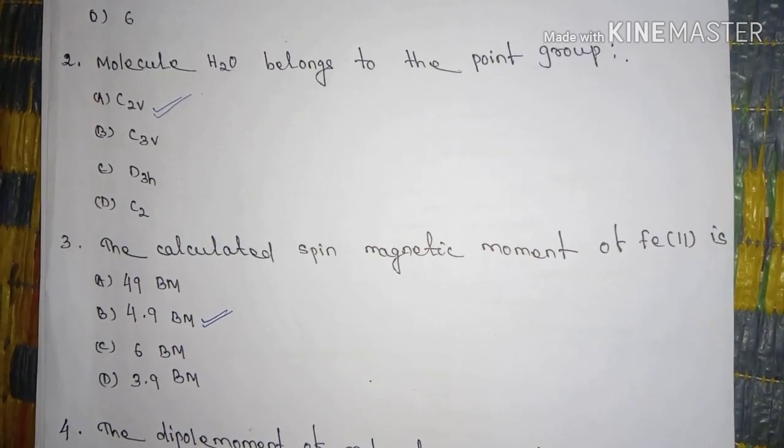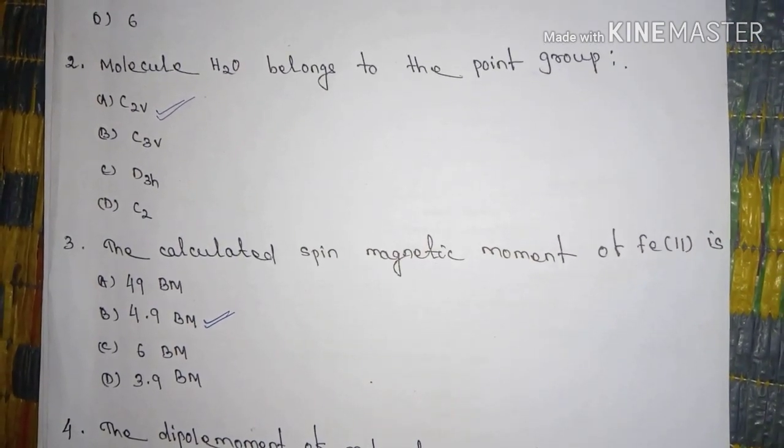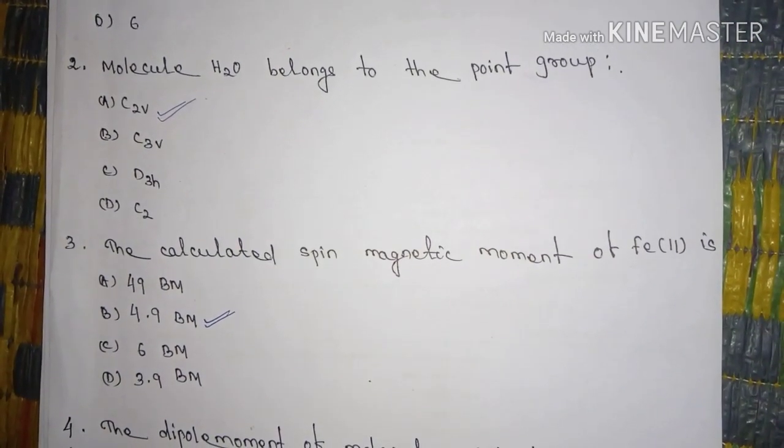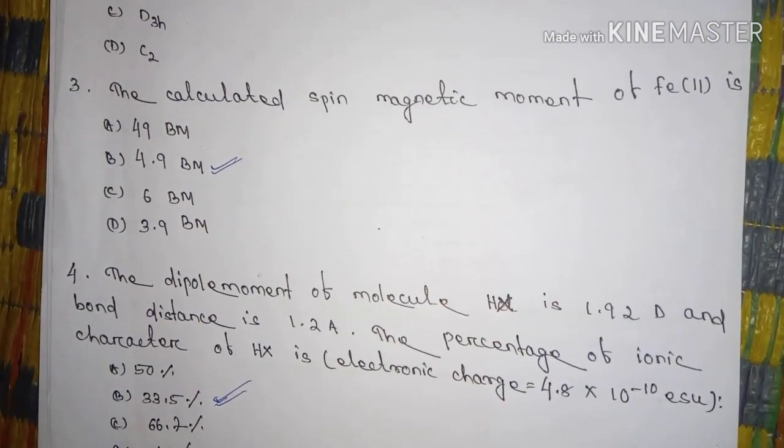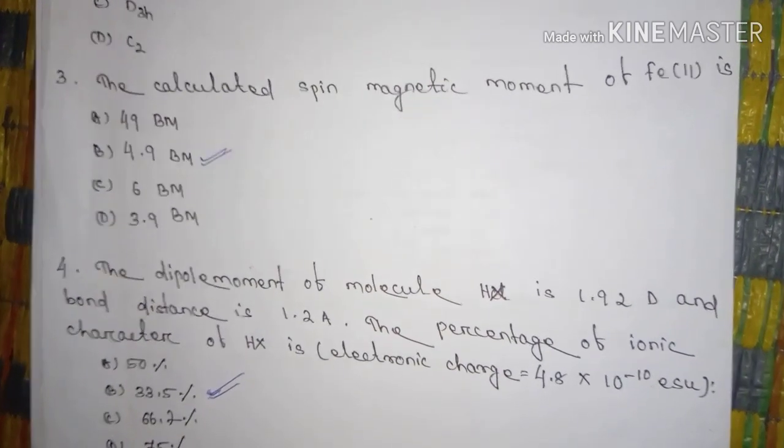Question number two is molecule of H2O belongs to the point group. The answer is C2V group.